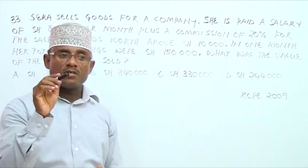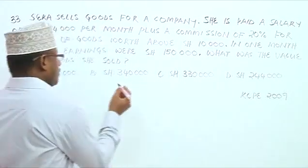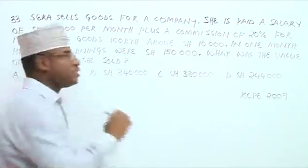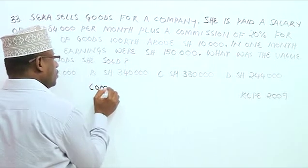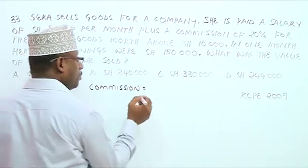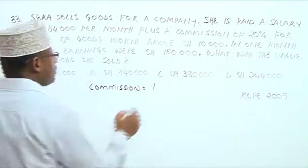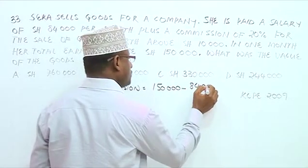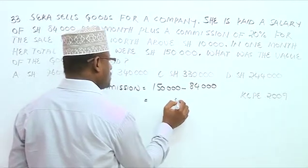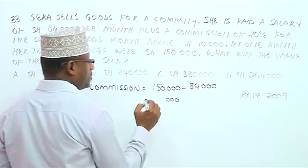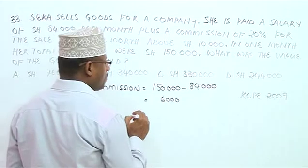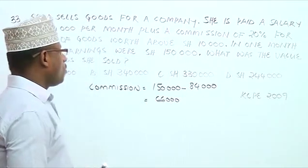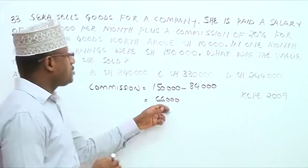Since she got $150,000 in one month, that equals her salary of $84,000 plus commission. So let us find the commission she got. The commission equals total earnings minus salary: $150,000 minus $84,000, which gives us $66,000. So the commission she received was $66,000.